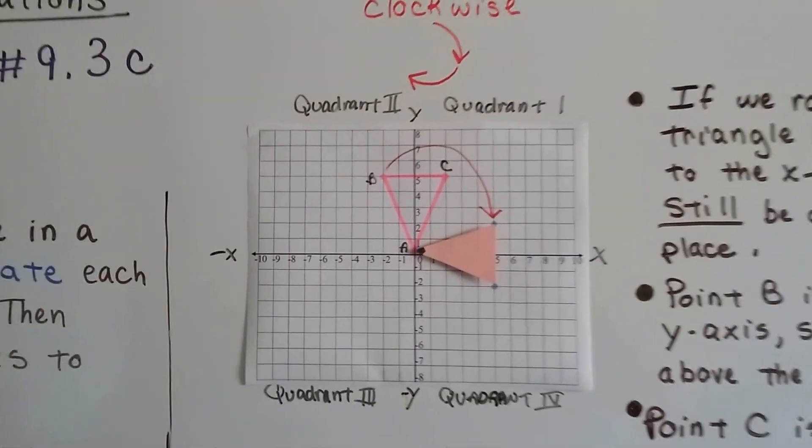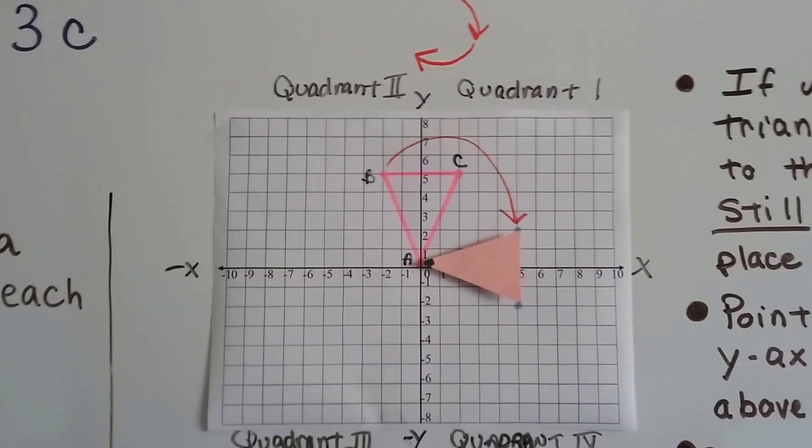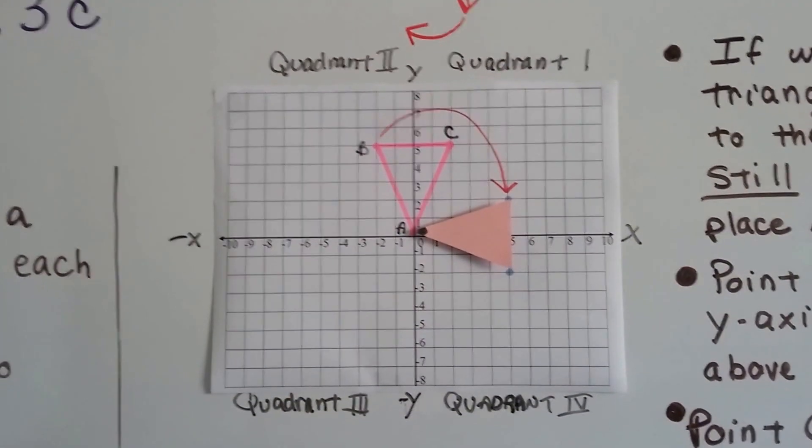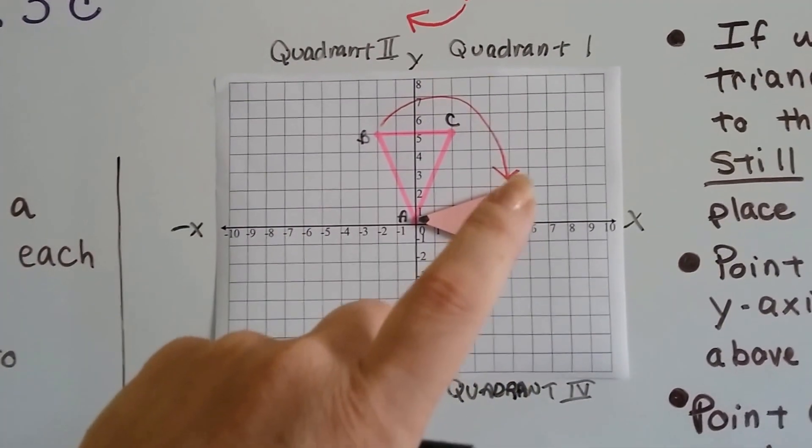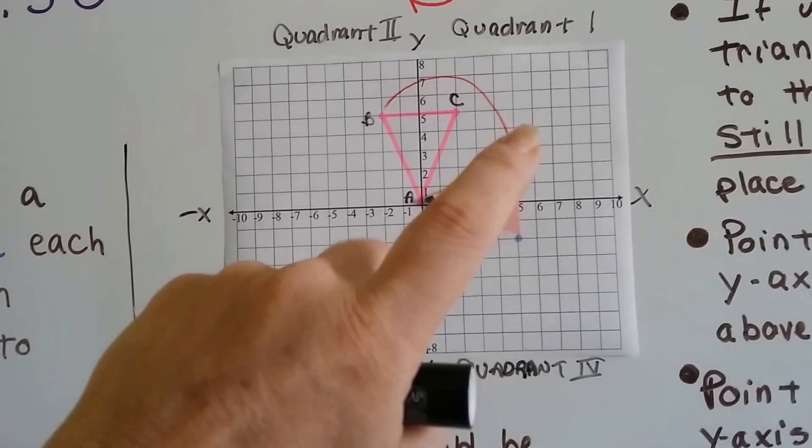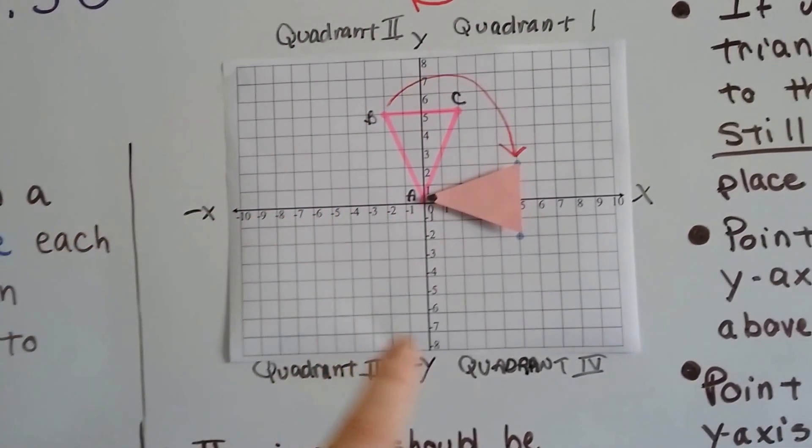Alright, so here we've got our coordinate plane, and we've got our quadrants labeled on here. Remember what I said to remember where the quadrants are? This is a coordinate plane. A coordinate starts with the letter C. So, we make a letter C. It starts here, and it comes around. See that?